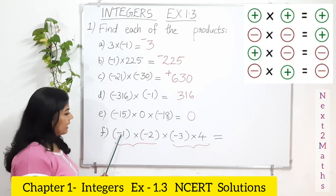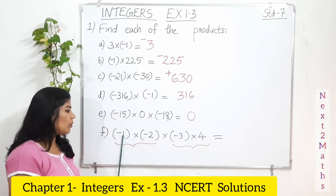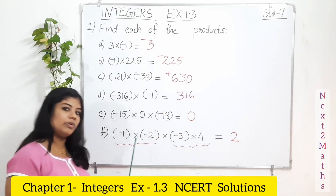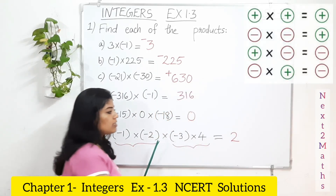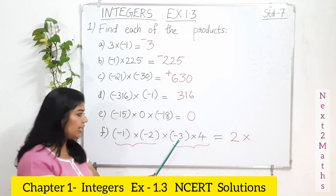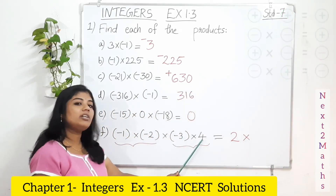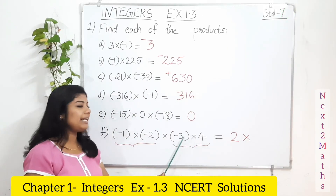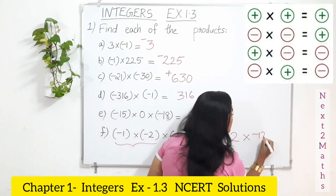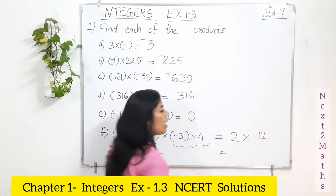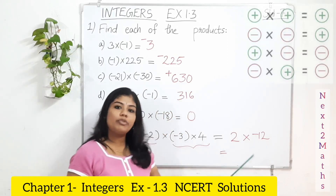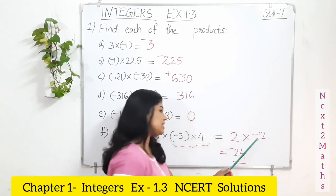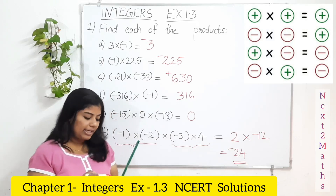Then multiply that result by the next pair. Negative 3 multiplied with 4: 3 times 4 is 12, so you get negative 12. Now 2 multiplied with 12 is 24. Since one result is positive and one is negative, your final answer is negative 24.